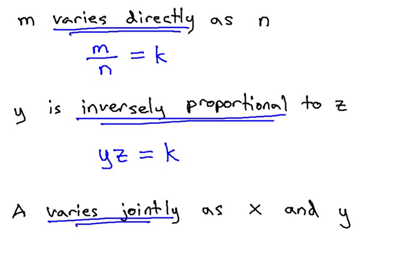The way we do joint variation equations is we take the first variable that varies jointly with the other two, and divide by the product of the other two to equal our constant.